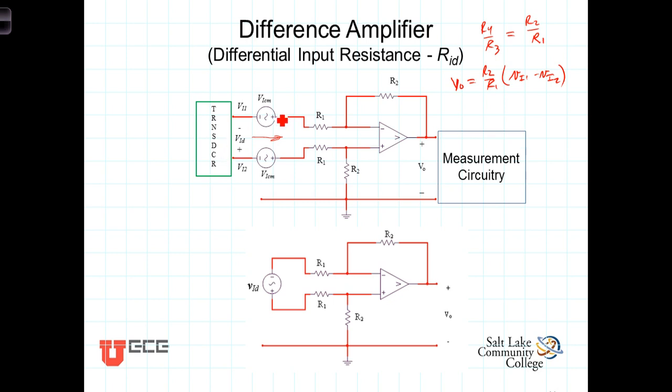To accomplish this, we're going to deactivate the modeled common mode noise and replace the transducer with a voltage source that we'll call VID. And it's referenced plus to minus so that VID is equal to VI2 minus VI1.